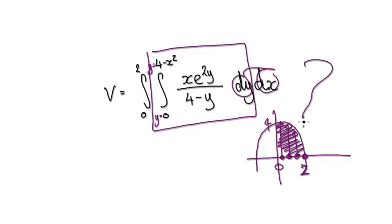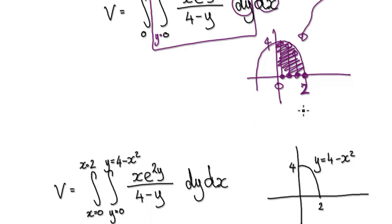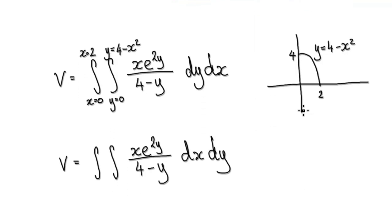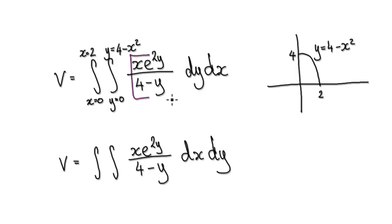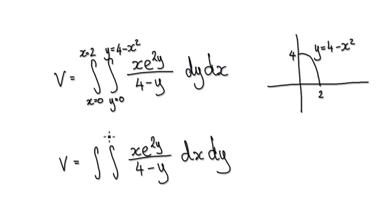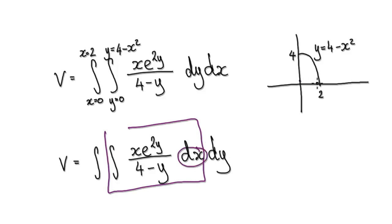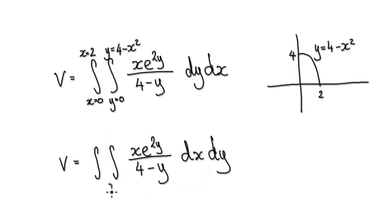Now that we understand the region, we want to switch the two integrals around so we integrate with respect to x first. This means we're now moving parallel to the x-axis instead, so the bounds must be x equals something to x equals something, matching up with dx.